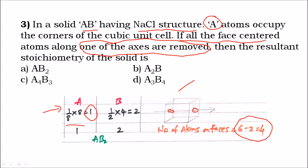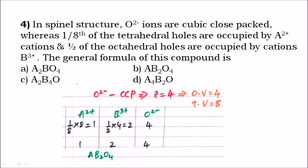So face-centered atoms become six minus two equals four. The portion for one unit cell is one-half into four equals two. So B atoms equal two. The formula is AB₂, and the right answer is option A.